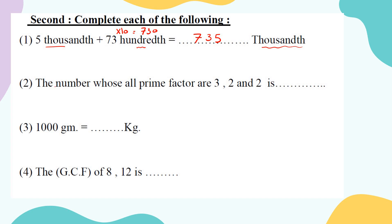A number whose prime factors are 3, 2, and 2 — to find it, multiply all the prime factors together: 3 times 2 times 2. Three times two equals six, six times two equals twelve. So the number is 12.